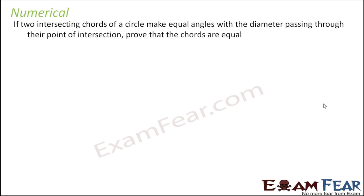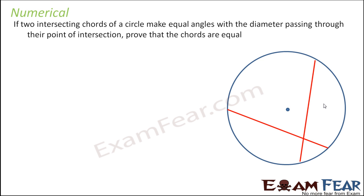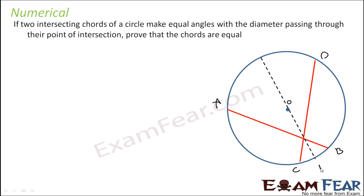So let's draw a circle. There are two intersecting chords, and this chord makes equal angles with the diameter. Let's draw a diameter — this diameter passes through the point of intersection. There are two chords. Let this be A, B and C, B. Let O be the center, P be a point, and let this point be T. So now we have to prove that the chords are equal — that is, AB is equal to CD.